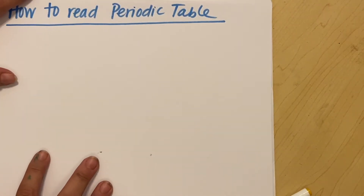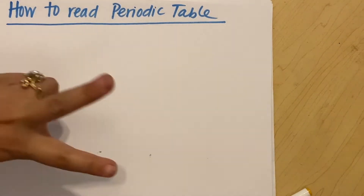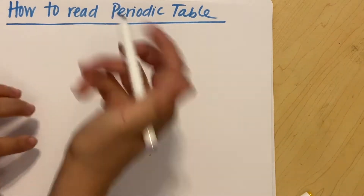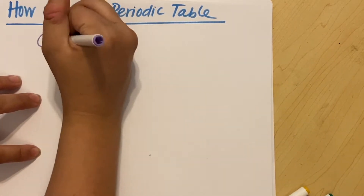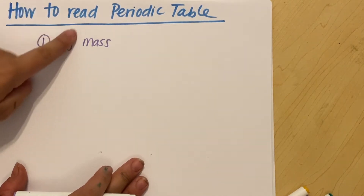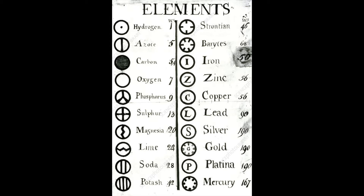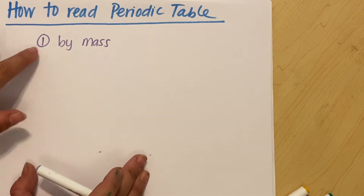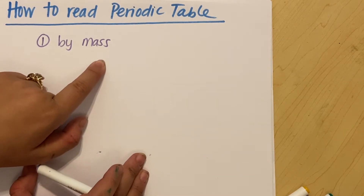The way that we used to organize our elements was two different ways. Way number one was by mass. We just had this giant long list of elements by their mass, which tells us some stuff, but it's not very useful because you can't make any generalization about how these different atoms are going to react if it's just in one giant long list.